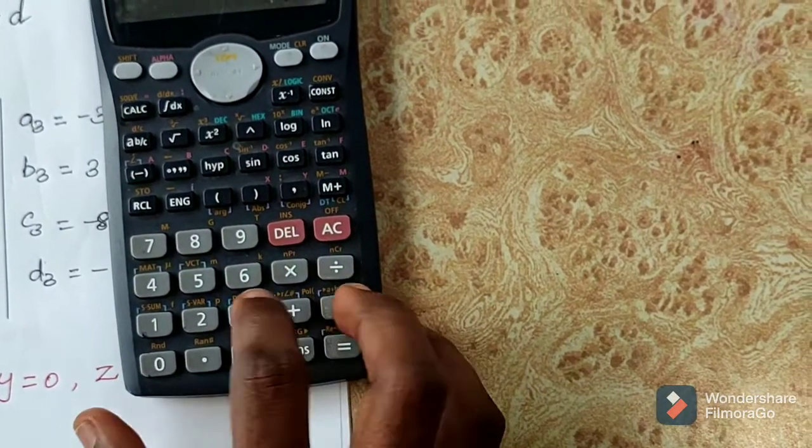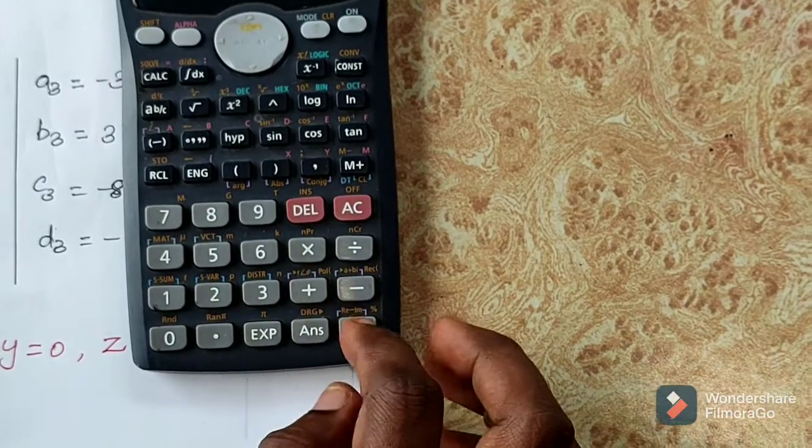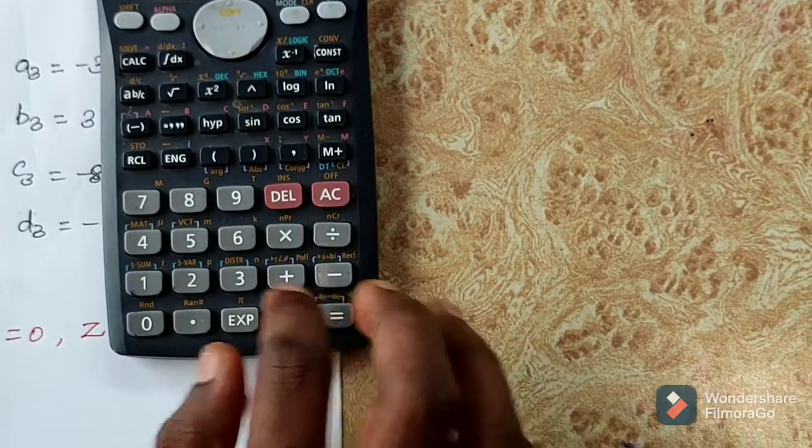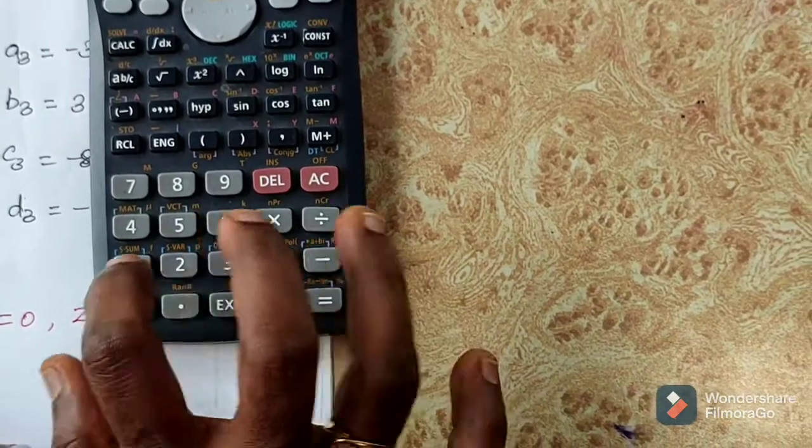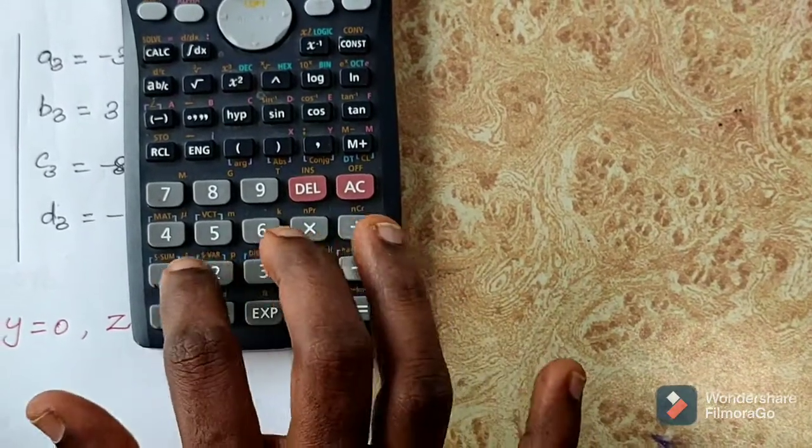A1 is 2, B1 is minus 1, C1 is 5, D1 is 2. A2 is 1, B2 is 2, C2 is 3, D2 is 4.